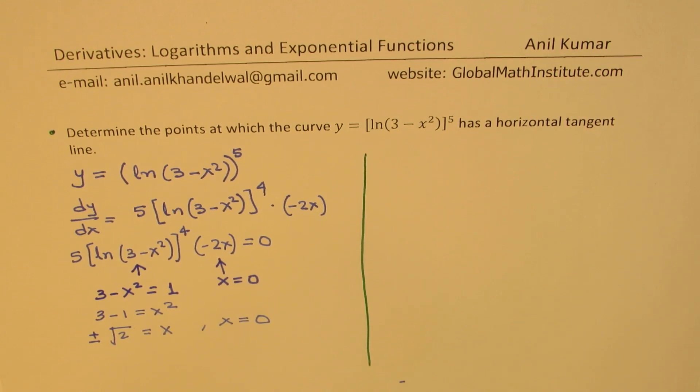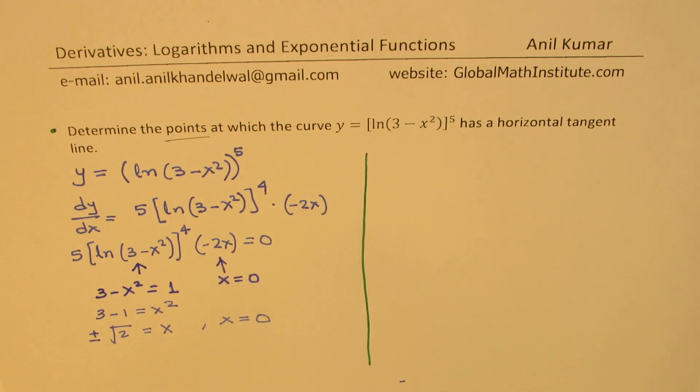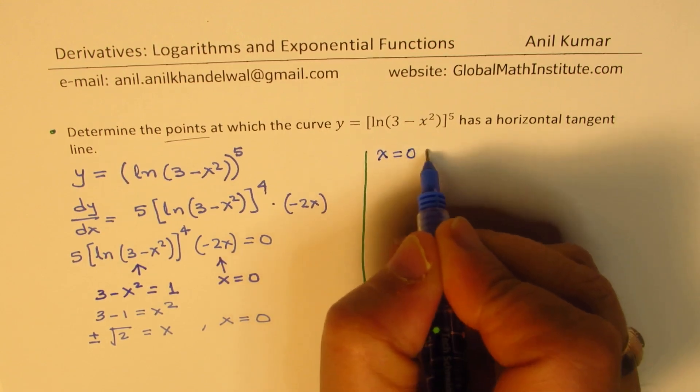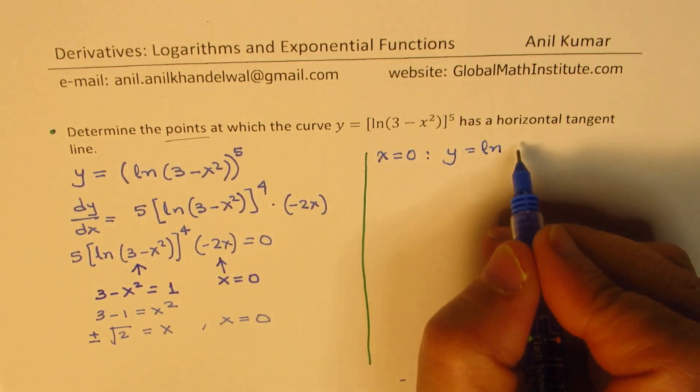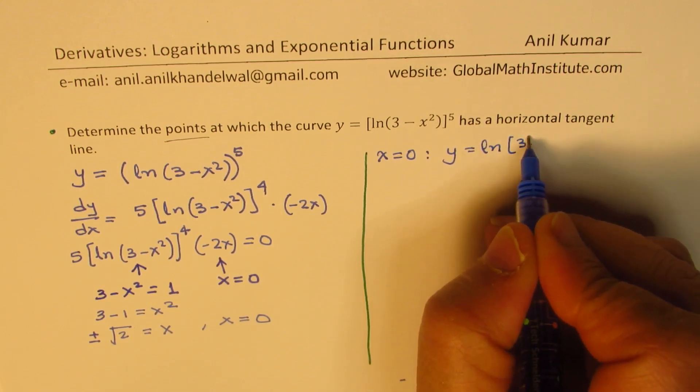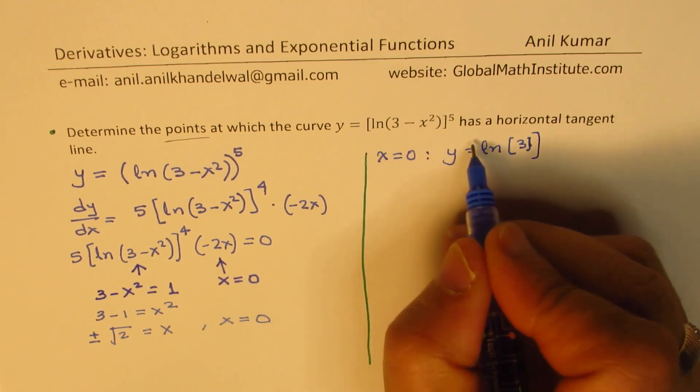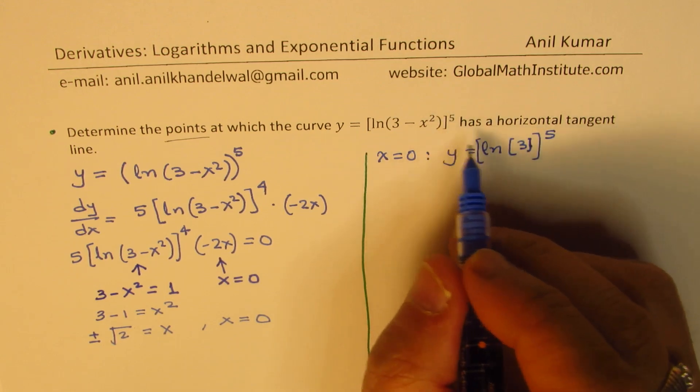Now let's try to find the points, since we need to find the points. You need to find the y value also. So we'll substitute x equals zero. For x equals zero, let's find what y is. We have y equals ln of 3 minus 0, which is 3, and everything here is to the power of 5.